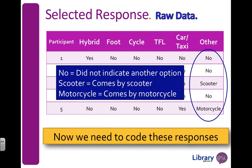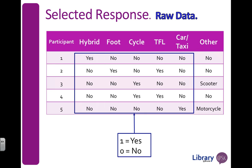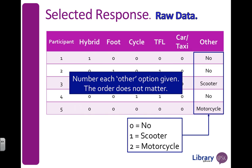For the 'other' category it's slightly different. Zero means they did not indicate an other option. Then I code all of the other responses — so if they put scooter, it means they came by scooter or motorcycle. My yes/no options are zeros and ones, but for other: no is zero, scooter is one, motorcycle is two, and I would number as many other options as participants indicated. The order doesn't really matter. I shouldn't create separate variables for scooter and motorcycle because I didn't give other participants that option, so I'll just leave them as the other option.